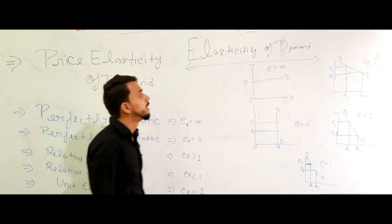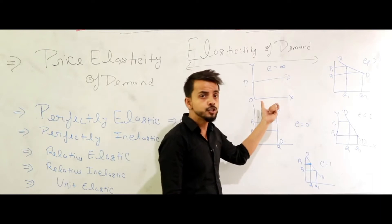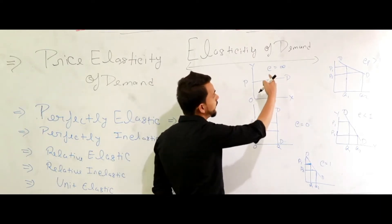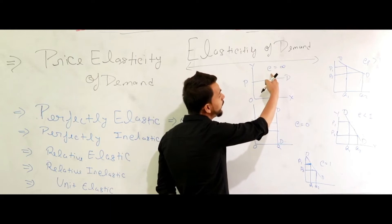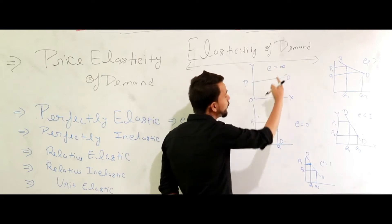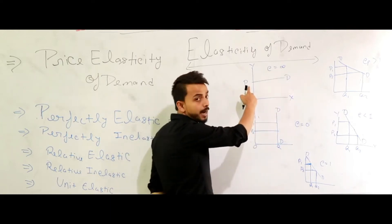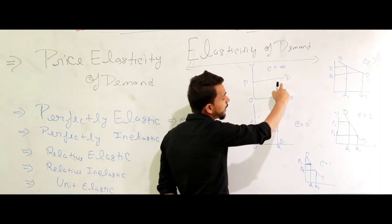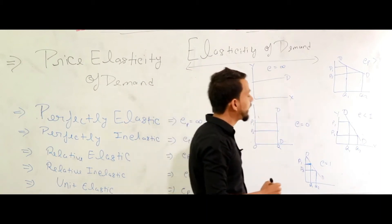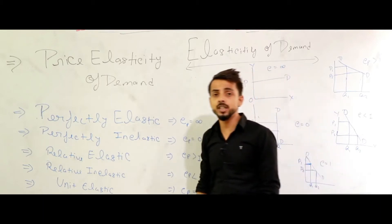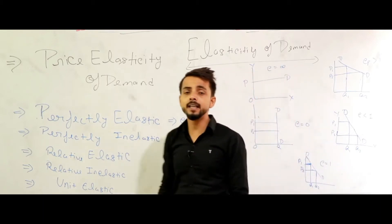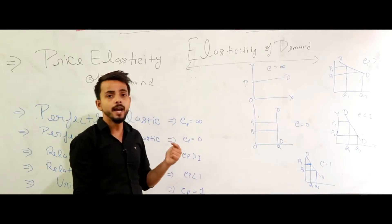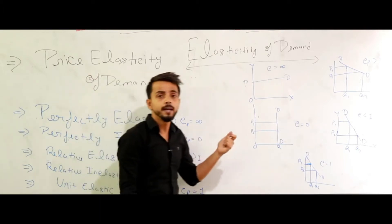See the first picture showing perfectly elastic demand. Here ep equals infinity. It means there is no change in price, or there is only a very small change in price, but demand is changing hugely — going high and down. This is shown by perfectly elastic demand.